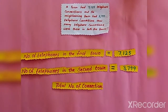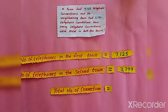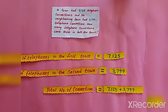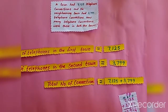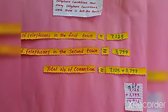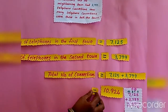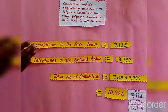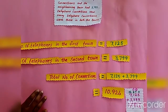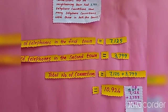To find the total number of connections, since it is a total we have to add. So: total = 7125 + 3799. When we add that we get 10924 as the answer. This is how we solve a statement problem — write the statements, list the given information, decide the operation, solve it, and find the answer.